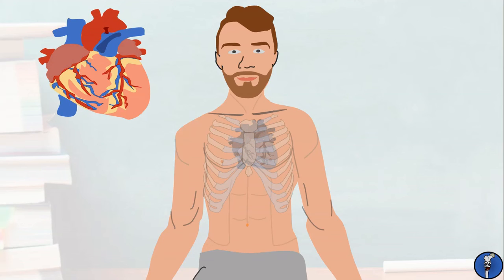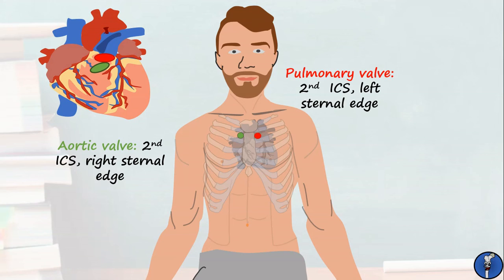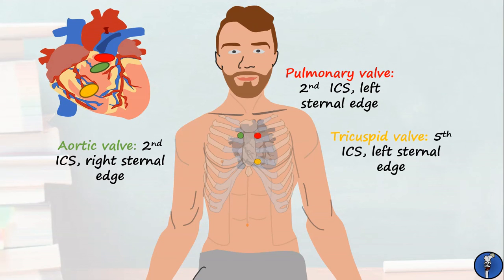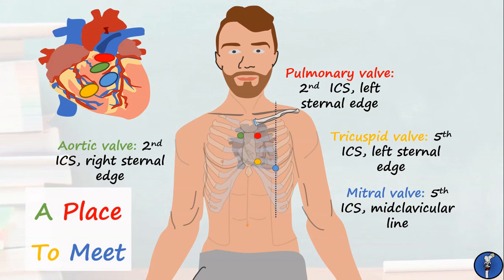Let's finish by looking at the heart valves and where to auscultate on the chest if you want to listen to them. First, we have the valve of the aorta, which is best heard in the second intercostal space, just adjacent to the sternum. Next, the pulmonary valve is best heard in the same horizontal plane as the aortic valve, but on the left side. Palpate three intercostal spaces downwards and you've found the best place to listen to the tricuspid valve. Finally, follow the fifth intercostal space laterally until you reach a line running through the midpoint of the clavicle, known as the midclavicular line — this is the ideal place to hear the mitral valve. From right to left, you can remember the order of the valves using the mnemonic 'A Place To Meet,' where the first letter of each word corresponds to a valve.